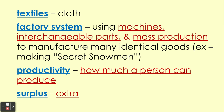The factory system — before this, people used to make things start to finish by hand. This is when people start to use machines, interchangeable parts, and mass production to produce many identical goods. For an old school example, think about making secret snowmen. Around Christmas time, you may have received a secret snowman with a little nice message and a candy cane. Our advisor used to make those — you can ask me about secret snowmen and I'll explain it in school.